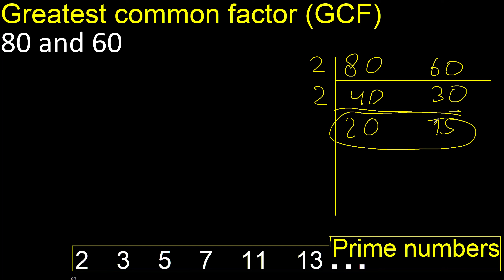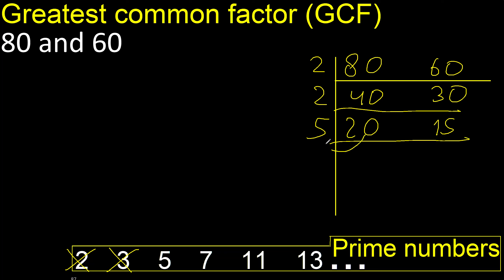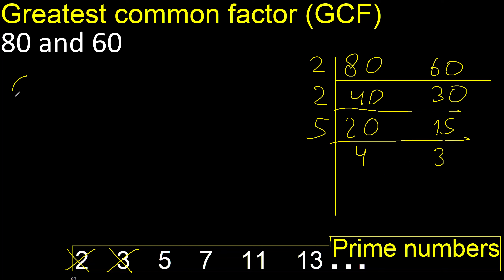Cannot be divided by 2 because 15 cannot be divided by 2. Cannot be divided by 3 because 20 cannot be divided by 3. Can be divided by 5. Therefore: 20 divided by 5 is 4, 15 divided by 5 is 3. Finish, because 4 and 3 cannot be divided by the same number.